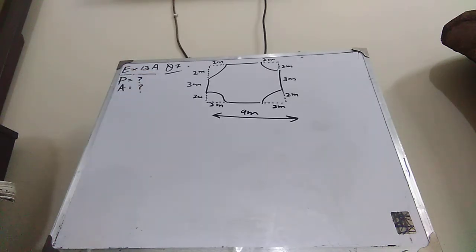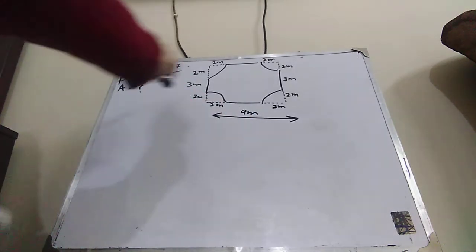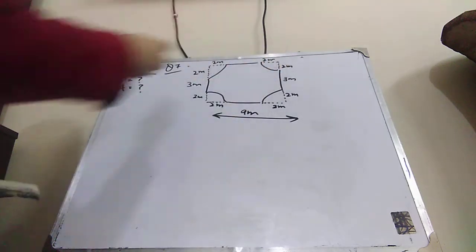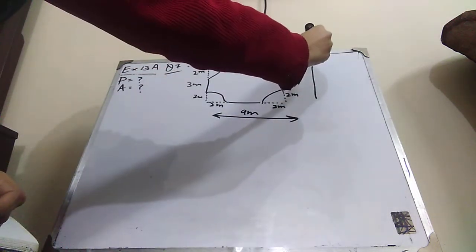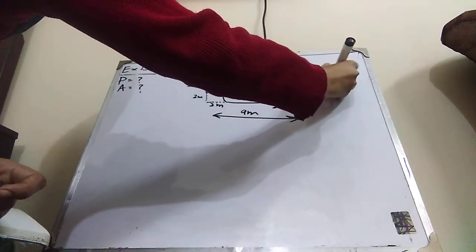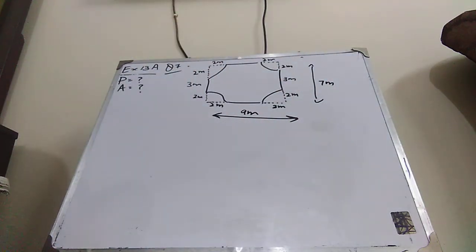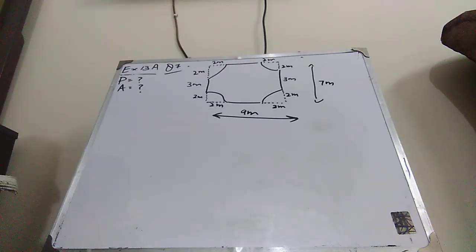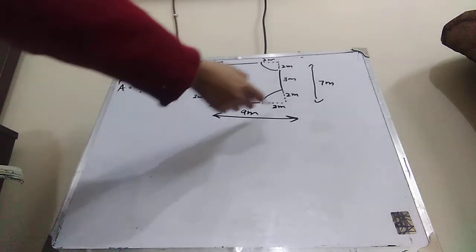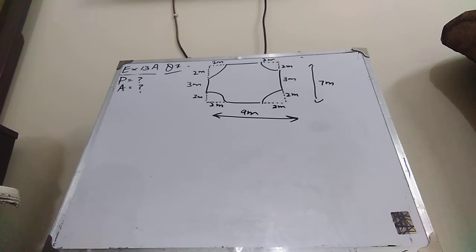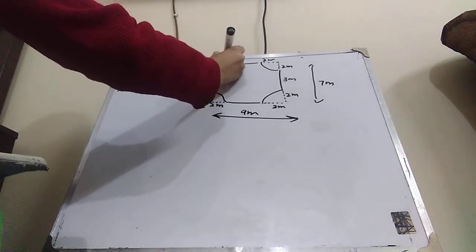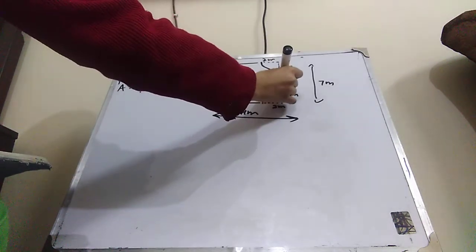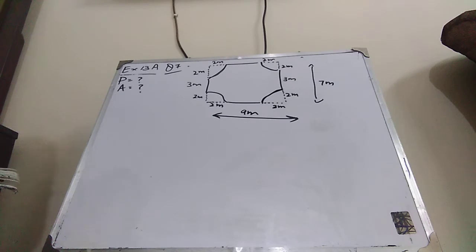Students, remember that the whole length is 9 metres, and the width is made up of 2 plus 3 plus 2, which equals 7 metres. So to find the perimeter of the figure, we subtract these dotted lines from the whole rectangle, and then we add back the curved boundaries inside the figure to get the perimeter of the remaining shape.